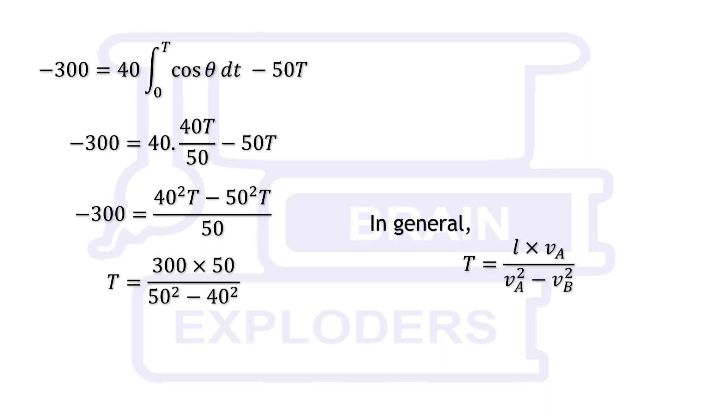In general, it is L times velocity of ship A over difference of the square of velocities of both the ships.